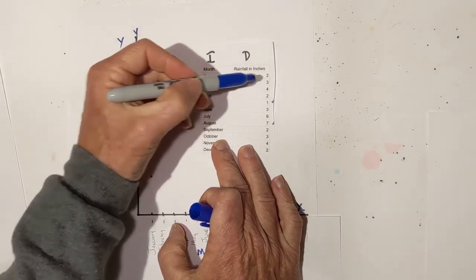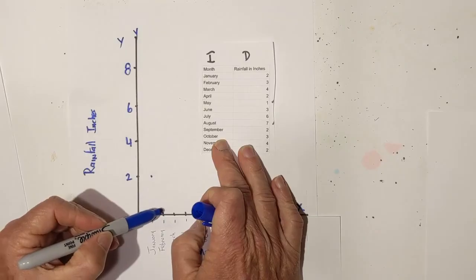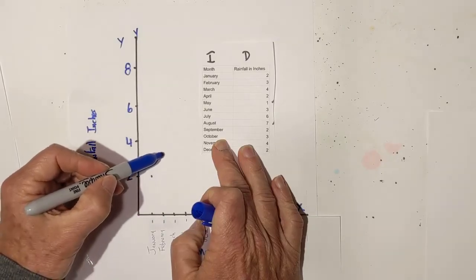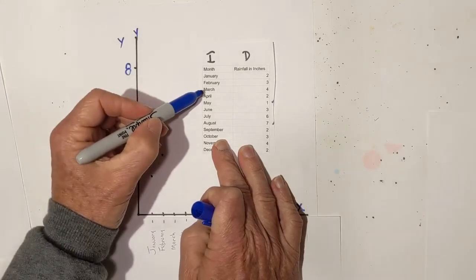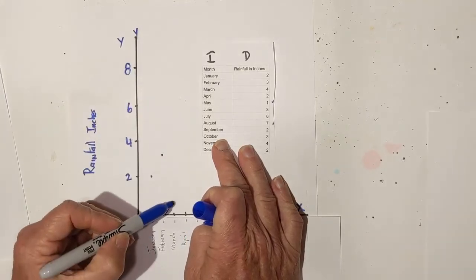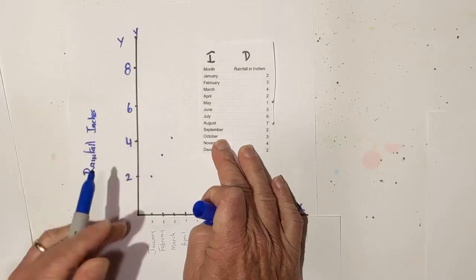For February, we have three inches. February is here, halfway in between two and four is that. Let's do one more and then I'll speed. For March, we have four inches. So March goes up to four.